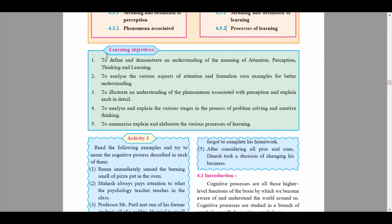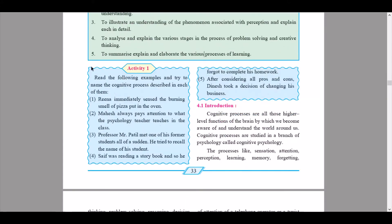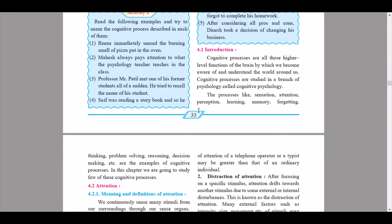Here we start with our learning objectives — read these as they might be important. Activity 1: please discuss this with your friends to get an efficient answer. Now the introductory part — 4.1 introduction: cognitive processes are all those higher level functions of the brain by which we become aware of and understand the world around us. Cognitive processes are studied in a branch of psychology called cognitive psychology. Processes like sensation, attention, perception, learning, memory, forgetting, thinking, problem solving, reasoning, and decision making are examples of cognitive processes.